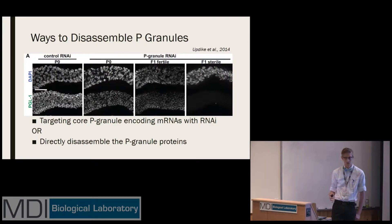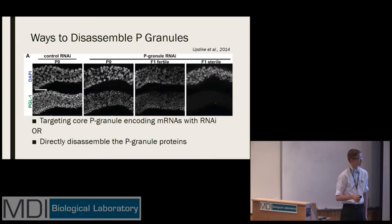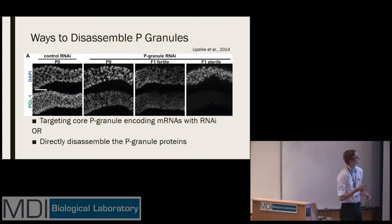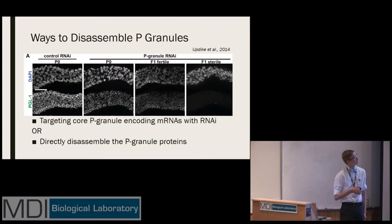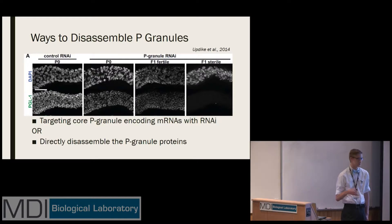We know these P granules are incredibly important, and how we know this is because without them, the germ line has problems. There are two main different ways that you can disassemble P granules. One is using RNAi to target on the mRNA level. When you run a control RNAi and stain for P granules, you see them present as would be expected. However, when you run an RNAi and interfere with the mRNA components, you lose P granules in the germ line and the worms can become sterile. However, that method is a little limited, which brings us to using a technique to degrade P granule proteins directly.